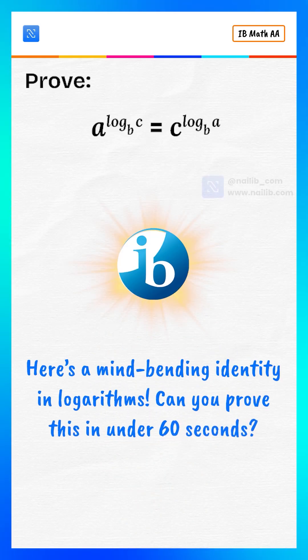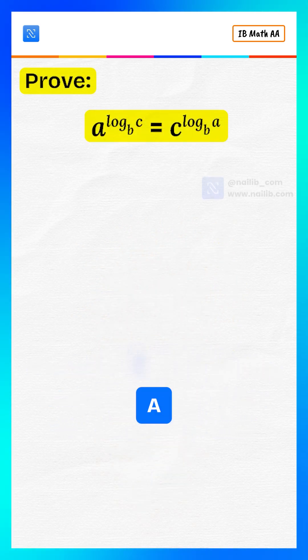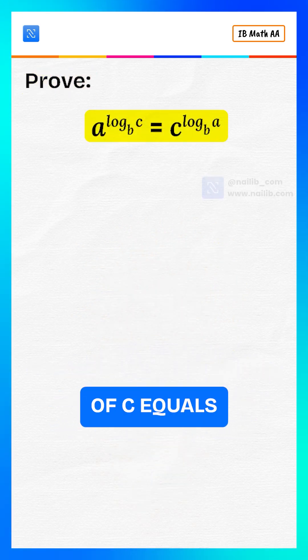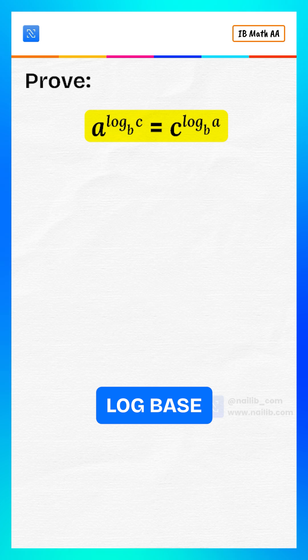Here's a mind-bending identity in logarithms. Can you prove this in under 60 seconds? Prove a to the power log base b of c equals c to the power log base b of a.